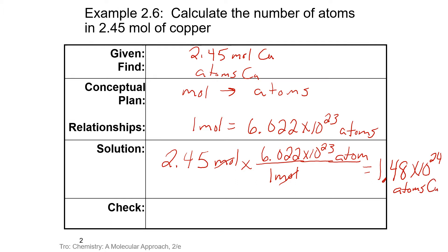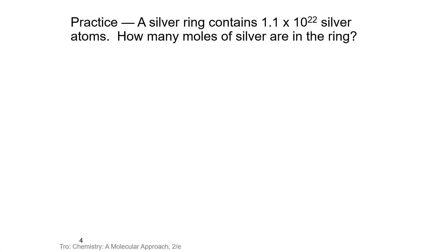We would expect our number to be larger than a mole because we had more than one mole. Here's a problem for you to try: pause the video and calculate the number of moles of silver in a ring that contains 1.1 times 10 to the 22nd silver atoms.